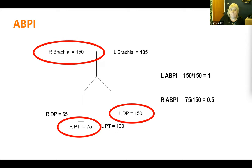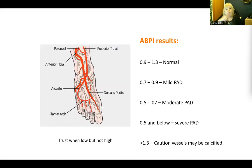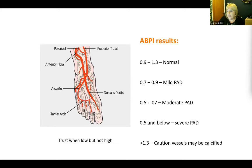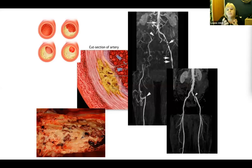For peripheral arterial disease, 0.9 to 1.3 is classed as normal arteries. 0.7 to 0.9 is mild disease. 0.5 to 0.7 is moderate disease. Below 0.5 is severe disease. Trust the ABPI when it's low — it's going to be accurate. But if it's above 1.3, do not trust it. Do not think you've ruled out significant arterial disease — you could just have vessel wall calcification. ABPI can be really difficult in patients with end-stage renal disease or diabetes because of arterial wall calcification, where you get falsely elevated pressures. If a patient's ABPI is borderline, make them walk, have the pain, then test again — if it drops, that can indicate significant PAD.